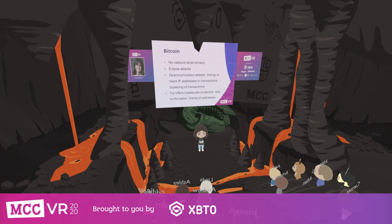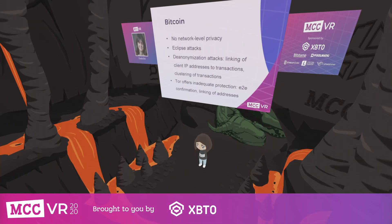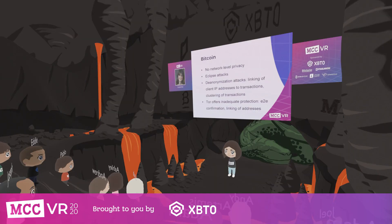In the case of Bitcoin, which doesn't have protections at the network layer, this has been shown to enable eclipse attacks that can then be used to mount more serious attacks such as double spending or selfish mining. In addition, researchers have shown that the timing of network messages shared in Bitcoin can be used to de-anonymize transactions, linking the transaction to the IP address of the user that generated it, or clustering transactions as belonging to the same person.